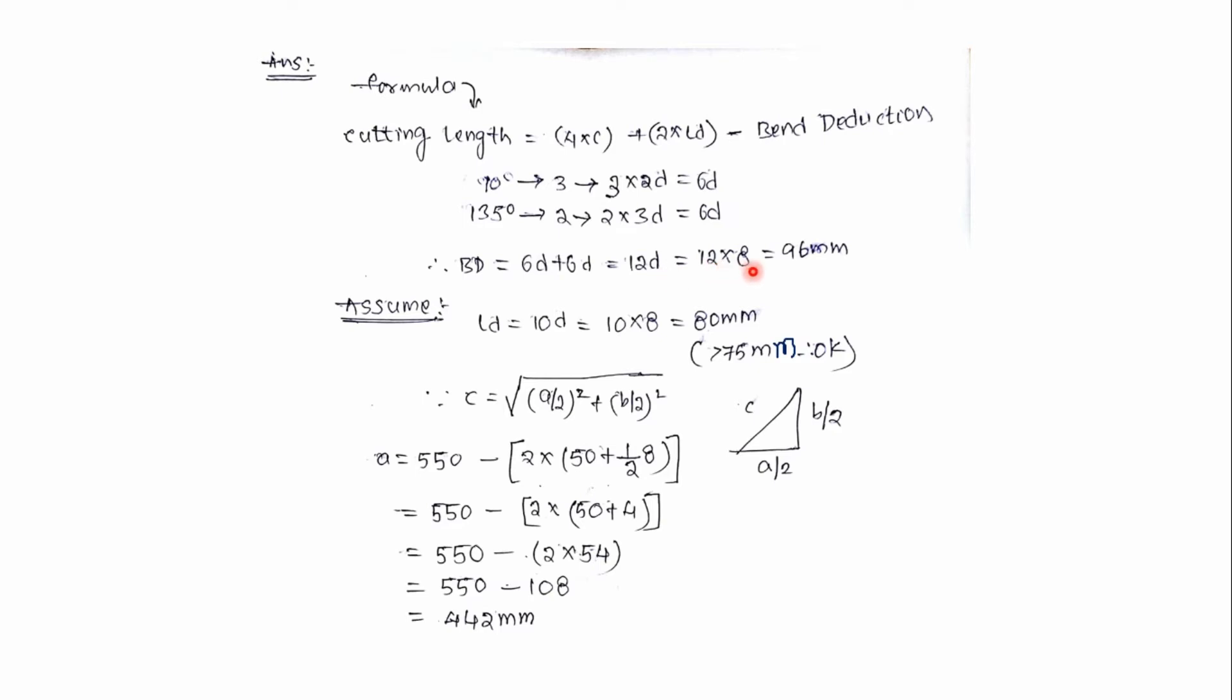Here d is the diameter of the stirrup, so 12 multiplied by 8 which is equal to 96 mm. I am assuming development length as 10 times the diameter, which is equal to 80. IS code recommends development length of the stirrup should be greater than or equal to 75 mm. In our case we have 80 mm which is greater than 75 mm, therefore okay.